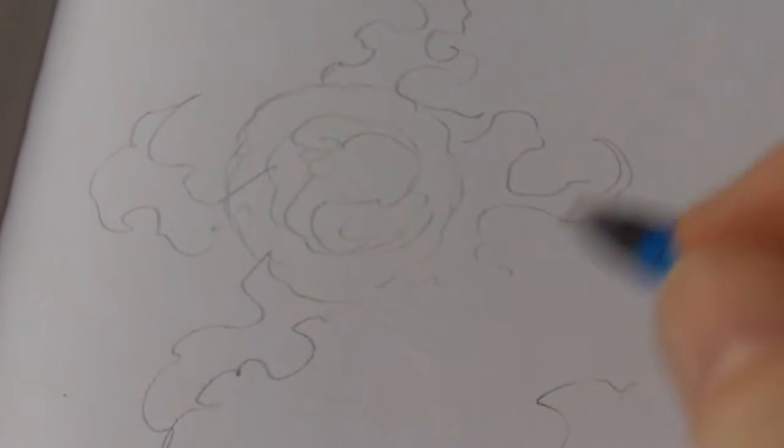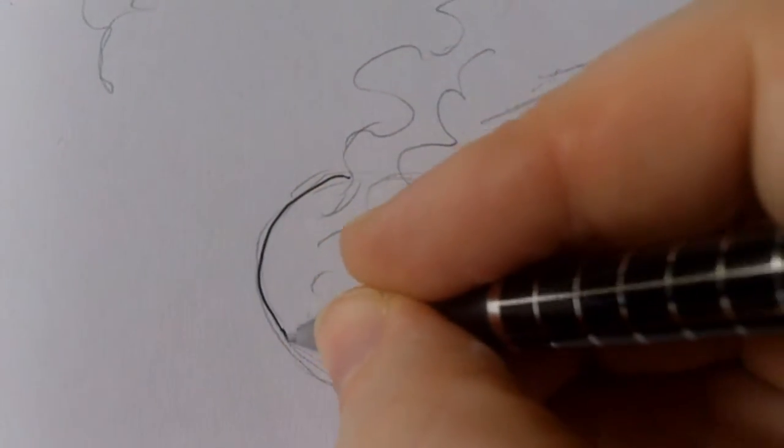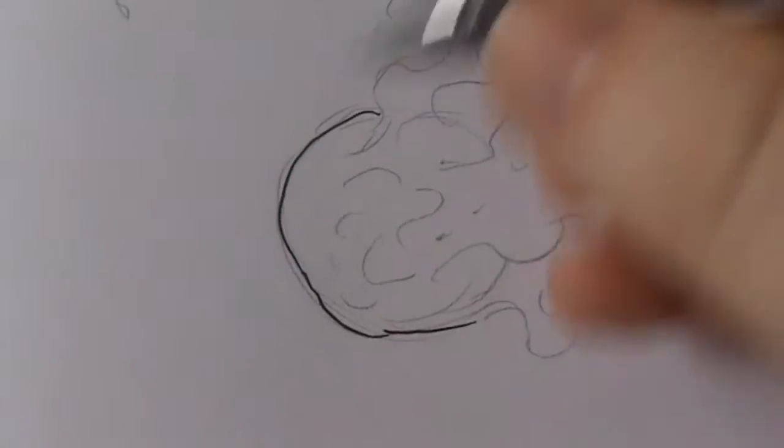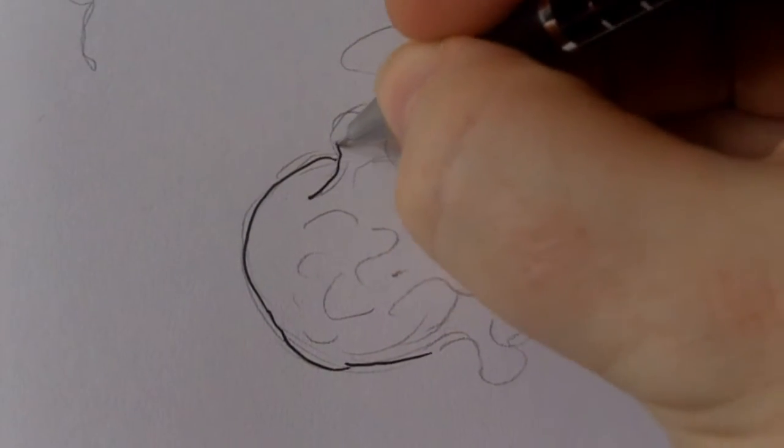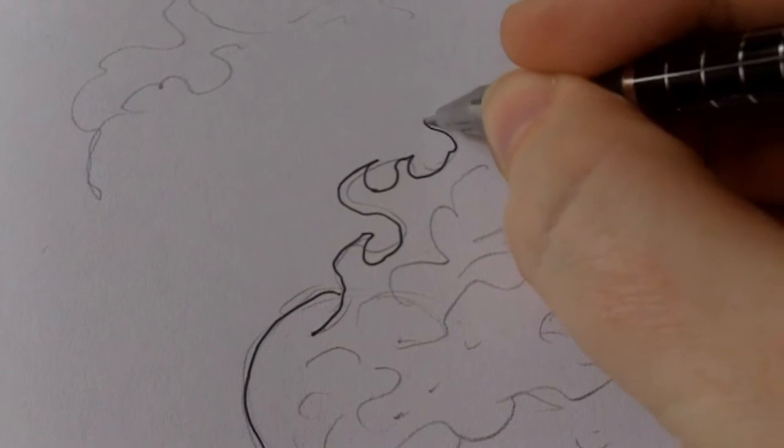So we'll ink them up and then we'll start to color them just to get a feel for the fire colors. Just start to ink this fireball quite loosely, it doesn't have to be exactly round, and just try and improve the flames.